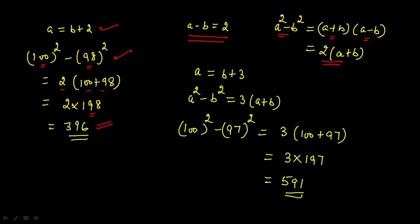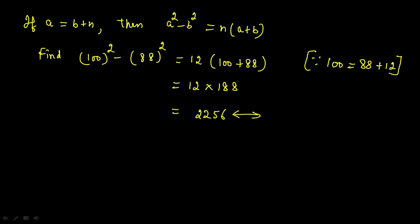The difference can be more — like 3, 4, 5, and so on. In the general case where the difference of a and b is n, meaning a equals b plus n, we get: a squared minus b squared equals n times a plus b, applying the same formula with a minus b equal to n. For example, to compute 100 squared minus 88 squared: the difference is 12, so n equals 12, and 100 plus 88 equals 188, giving us 12 times 188 which equals 2256.